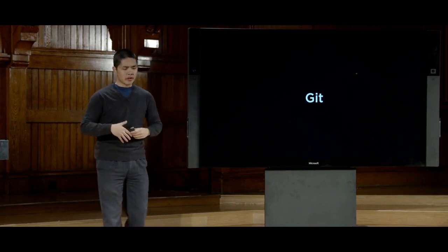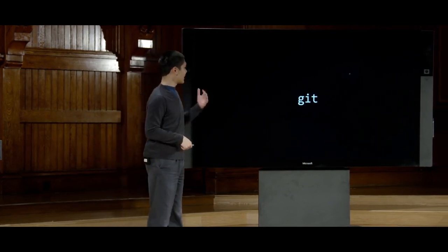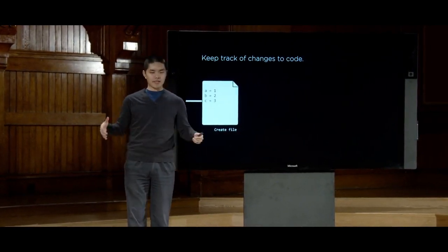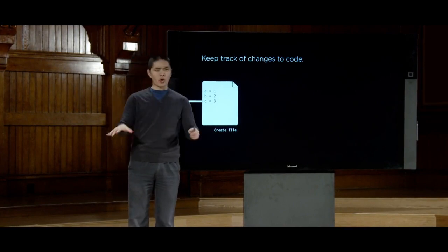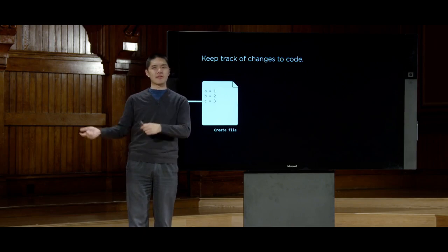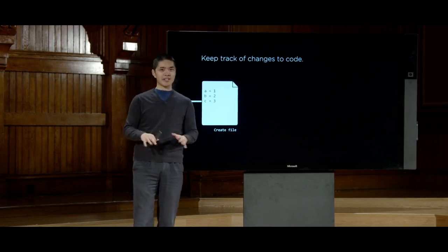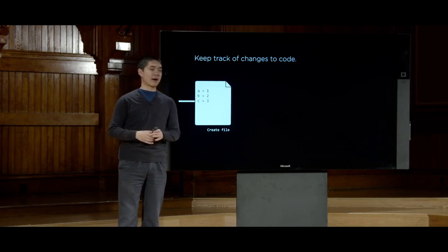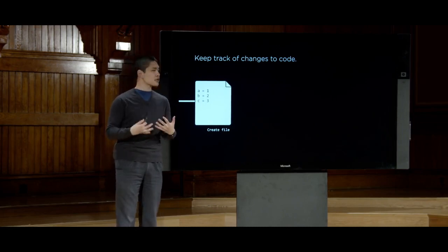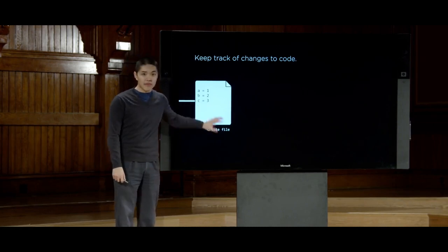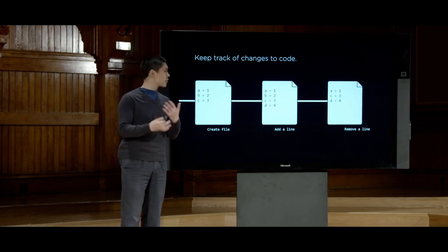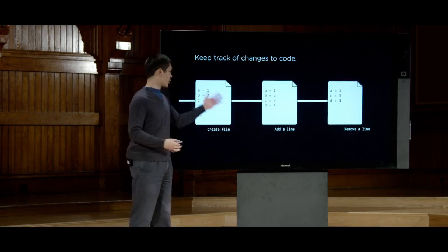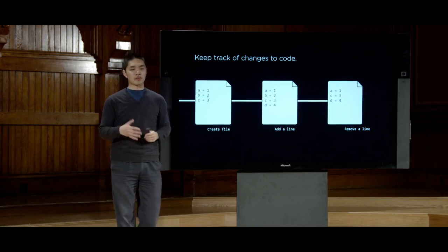So what is Git going to enable us to do? First and foremost, Git is a command line tool that allows us to keep track of changes we make to code. Rather than duplicating files to save old versions — which quickly gets messy — Git lets us save snapshots of our code at different points in time, so we can easily reference all the changes we've made.